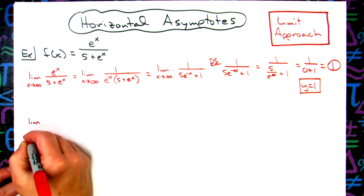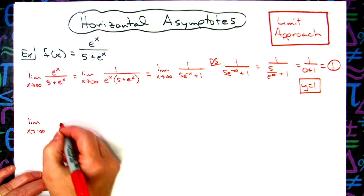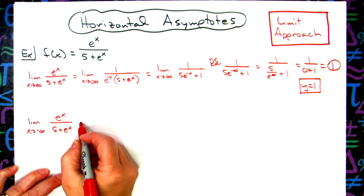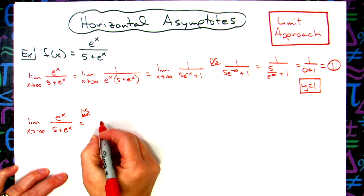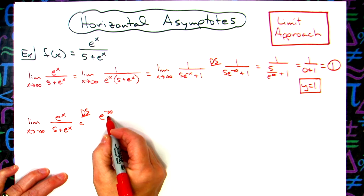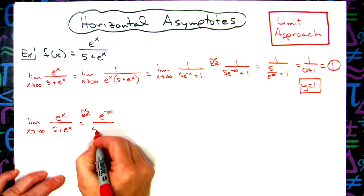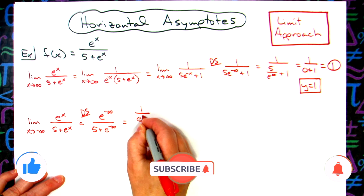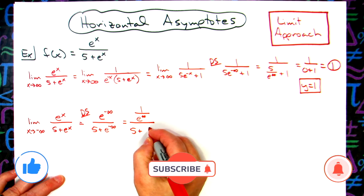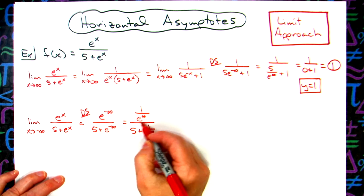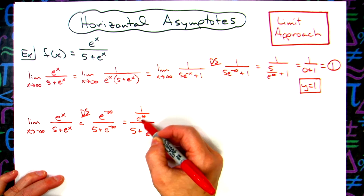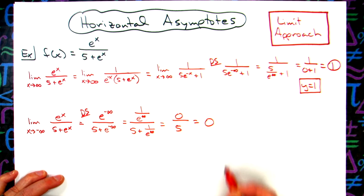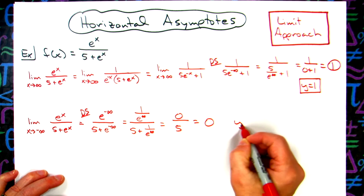Now we're going to try the limit as x approaches negative infinity of e to the x over 5 plus e to the x. I want to do a direct substitution right away. We're going to have e to the negative infinity — approaching a number that's getting really small — over 5 plus e to the negative infinity. Thinking of the numerator as 1 over e to infinity, and the denominator as 5 plus 1 over e to infinity, those terms go to 0. So we get 0 over 5 plus 0, giving us 0. The horizontal asymptote here is y equals 0.